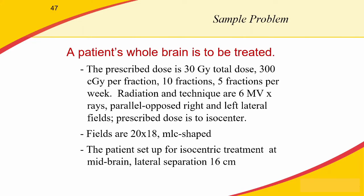Let's look at a clinical scenario: a whole brain treatment. The patient is prescribed 30 gray total dose, 300 centigrade per fraction, 10 fractions, five fractions per week. We're using a 6MV x-ray beam with parallel opposed fields and prescribing dose to isocenter.